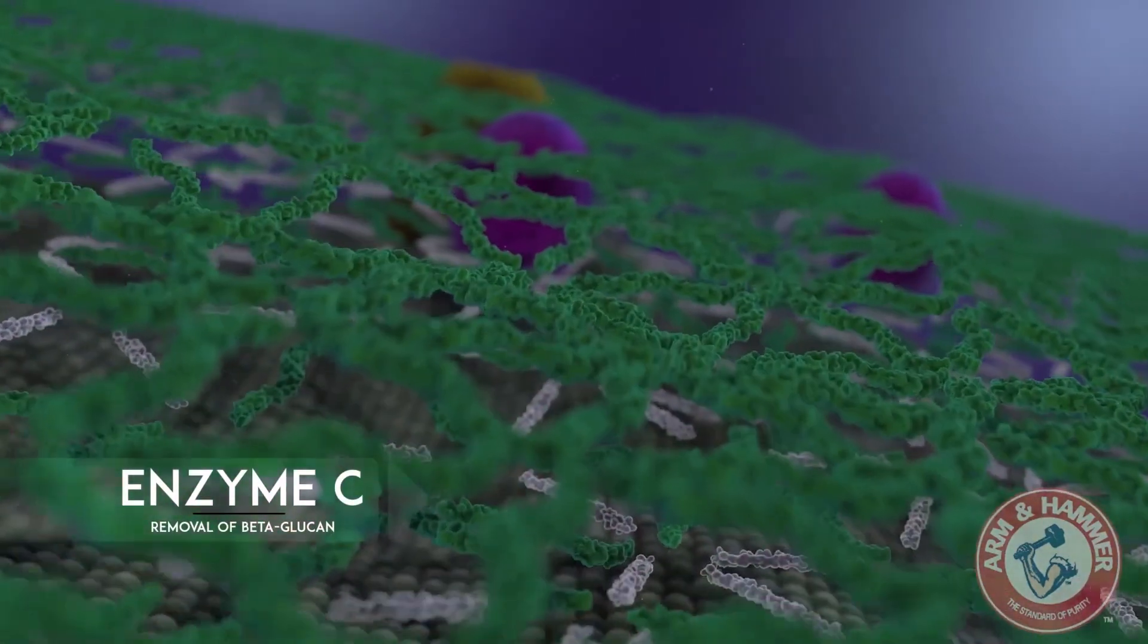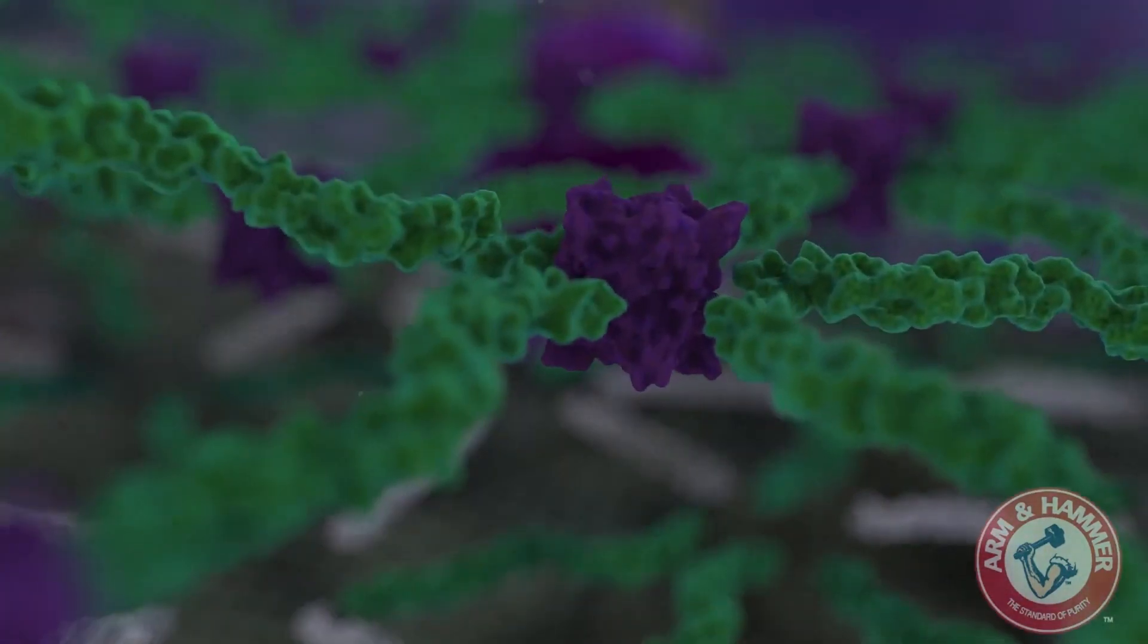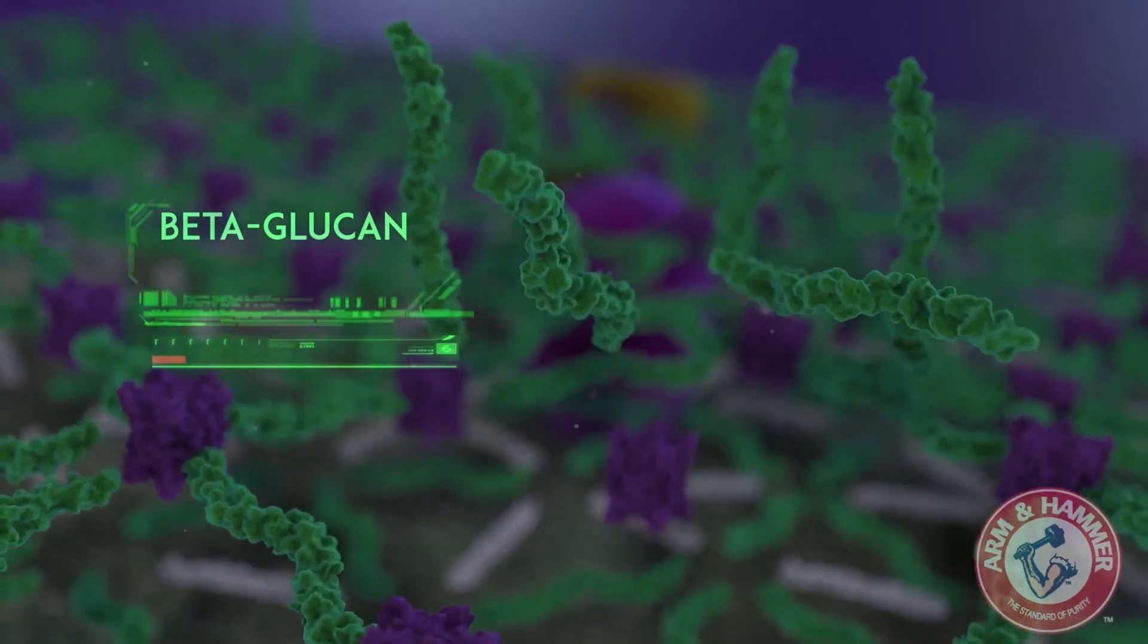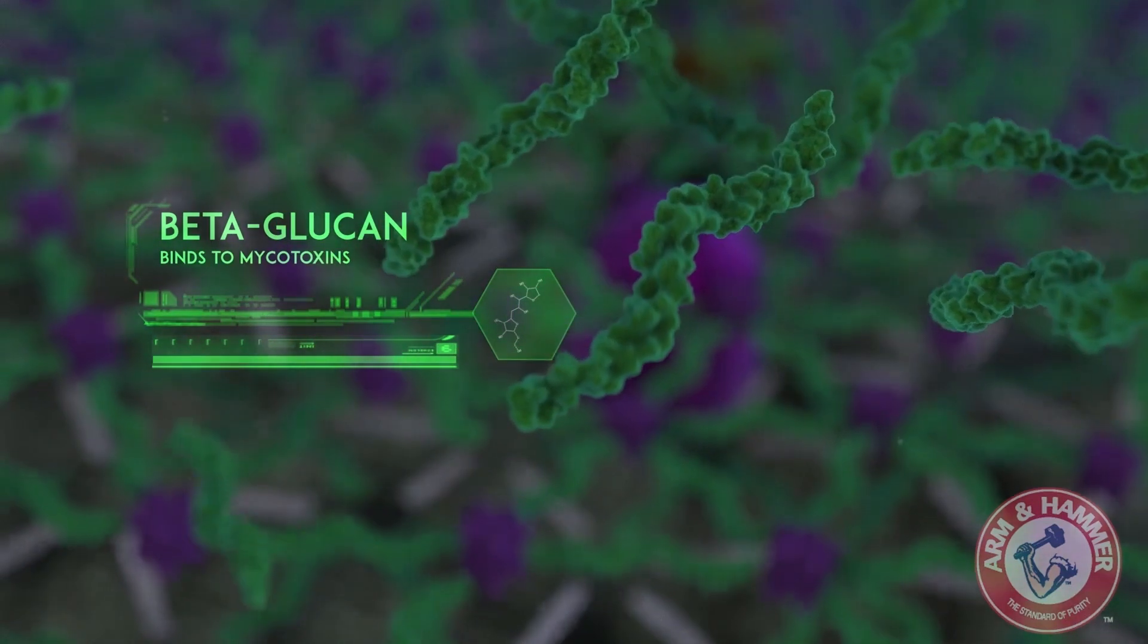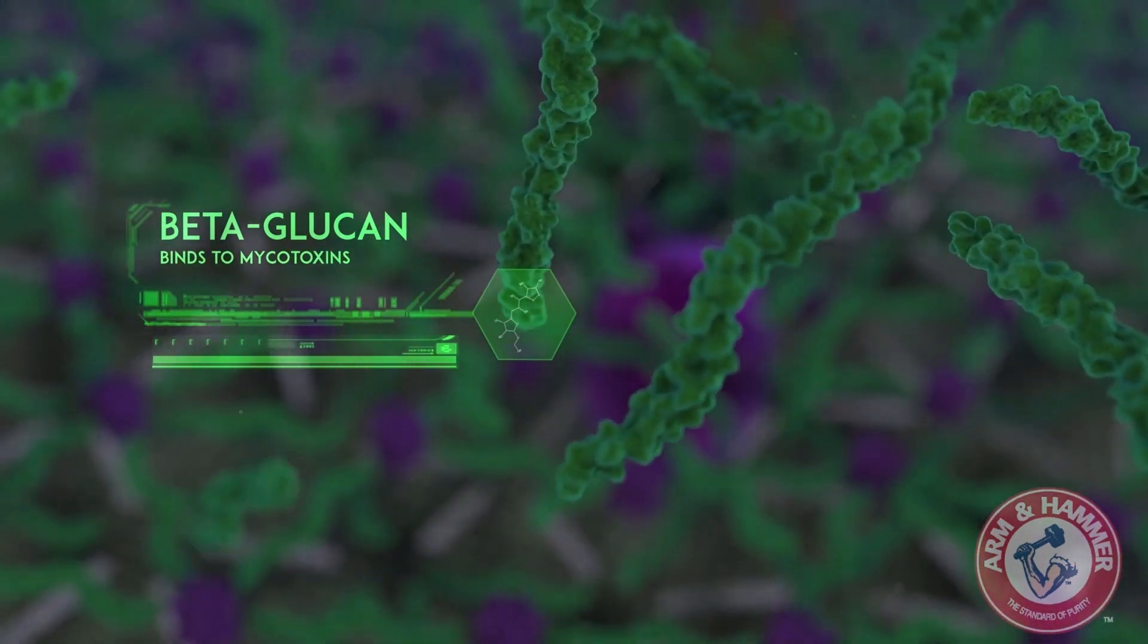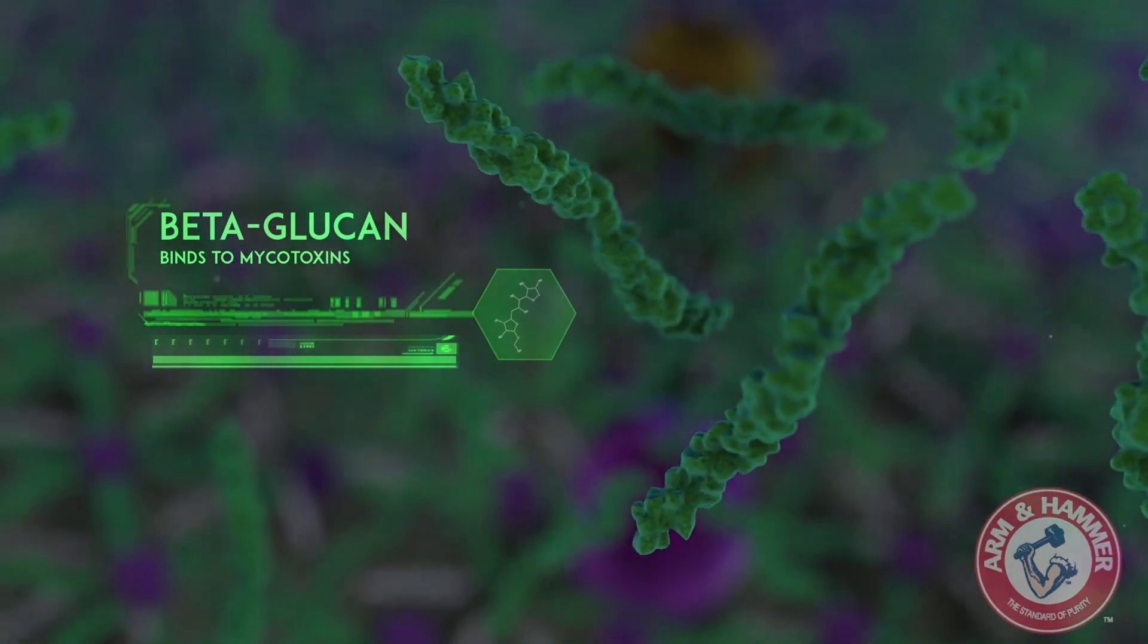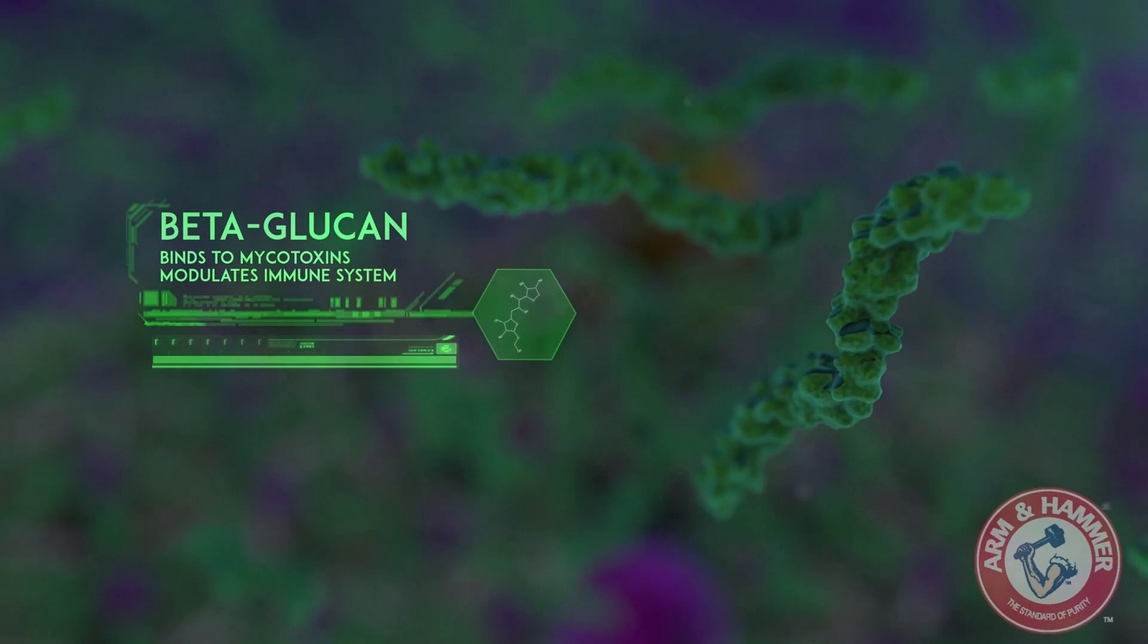Next, another specific enzyme separates the glucan layer of the cell wall. Once liberated from the cell wall, beta-glucan plays two major roles. Its physical chemistry allows it to bind to many mycotoxins, preventing them from negatively impacting livestock health and performance. Second, these specific beta-glucans from the yeast cell wall play a crucial role in placing the immune system in a state of readiness.